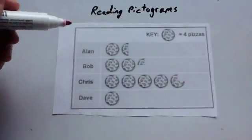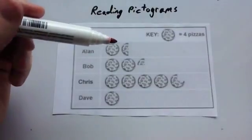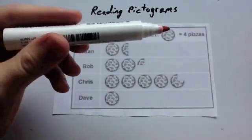We're now going to look at reading pictograms. So here's an example of a pictogram. A pictogram is where you've got a symbol representing a certain frequency or a certain number.